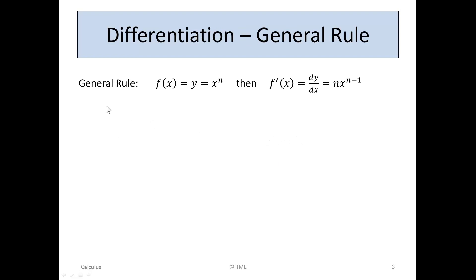The general rule of differentiation is that if f(x) equals y equals x to the power of n, then the derivative f'(x) or dy/dx is n times x to the n minus 1. So if it's x to the n, you take down the power n, use it as a multiplier, and reduce the power by 1 — n minus 1.